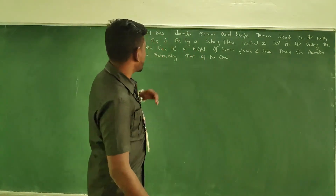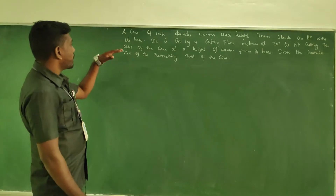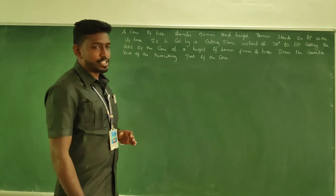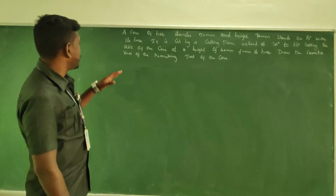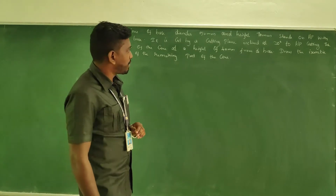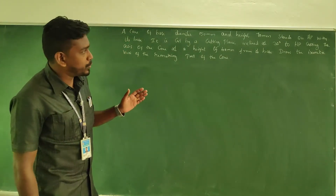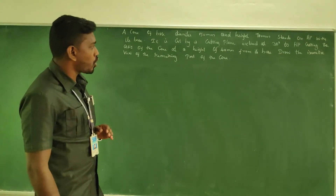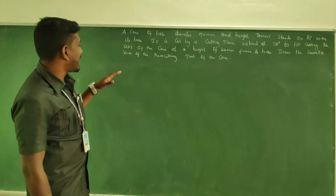Welcome. This question is from isometric projection. A cone of base diameter 50 mm and height 70 mm stands on HP with its base. It is cut by a cutting plane inclined at 30 degrees to HP, cutting the axis of the cone at a height of 40 mm from its base.